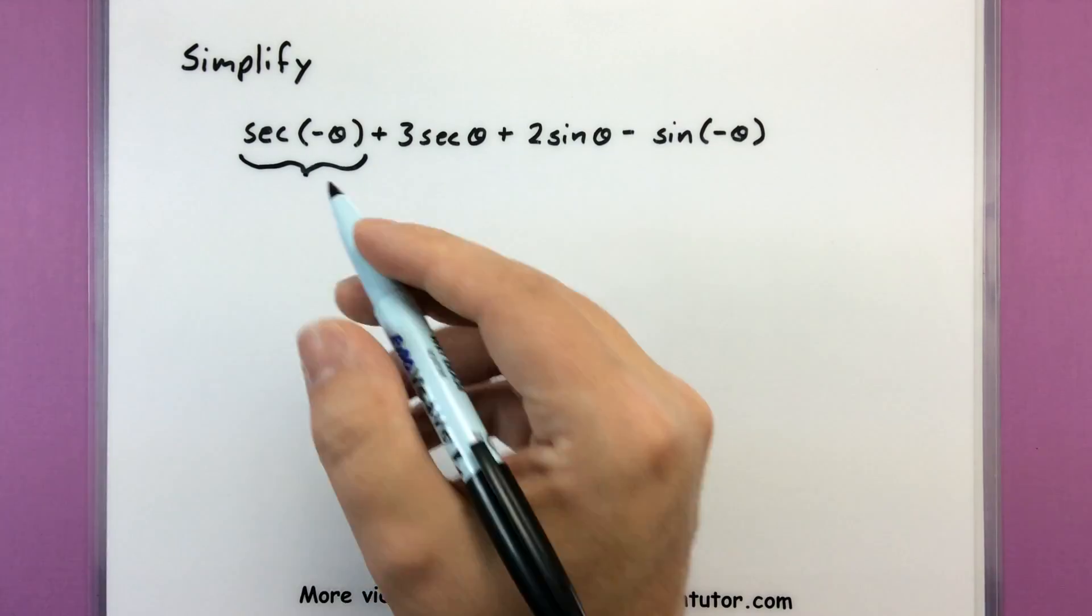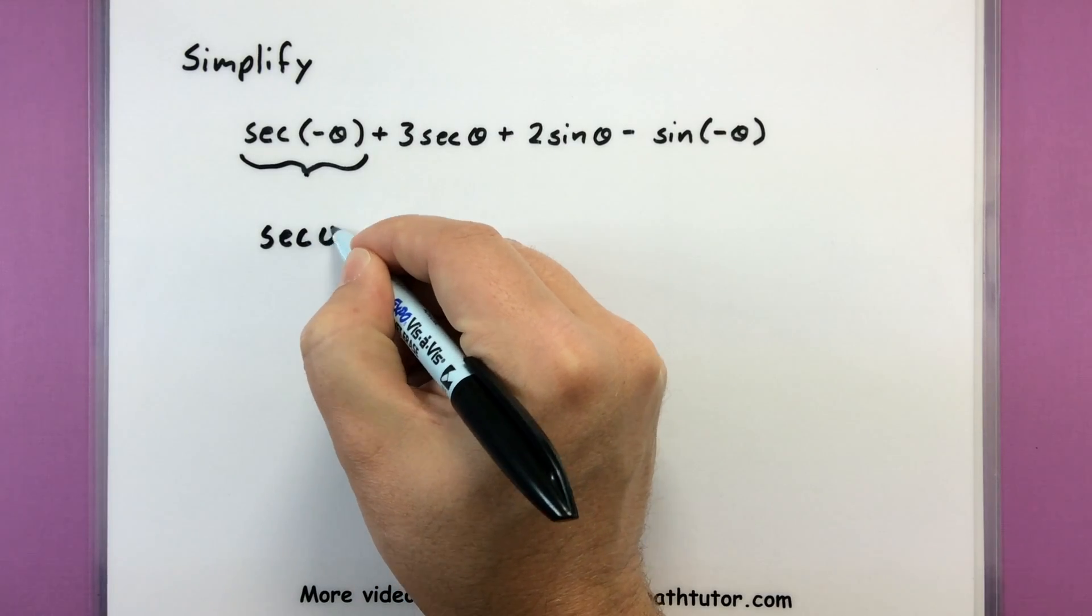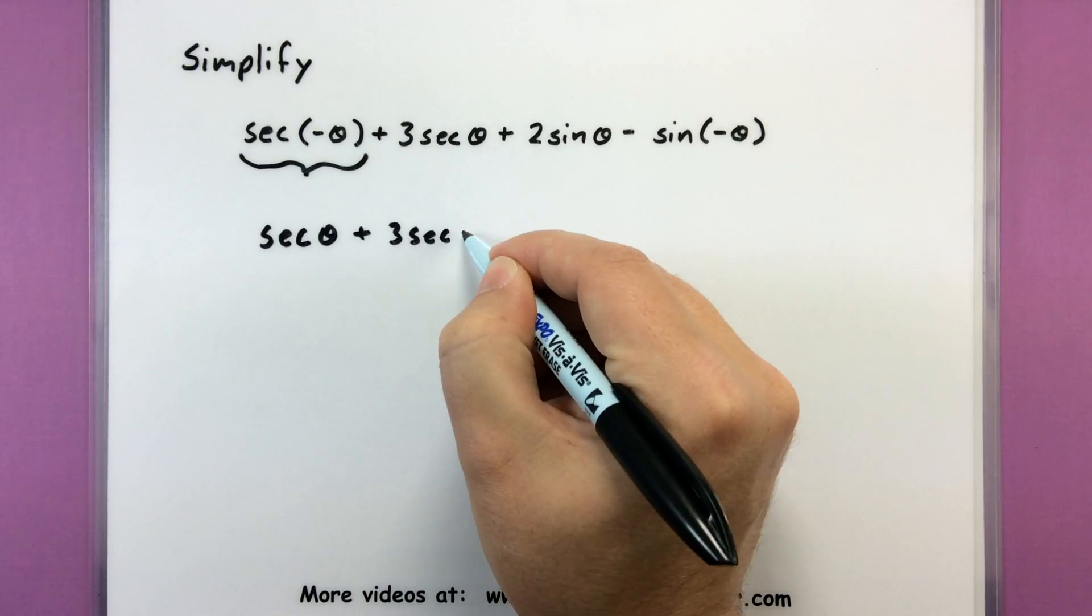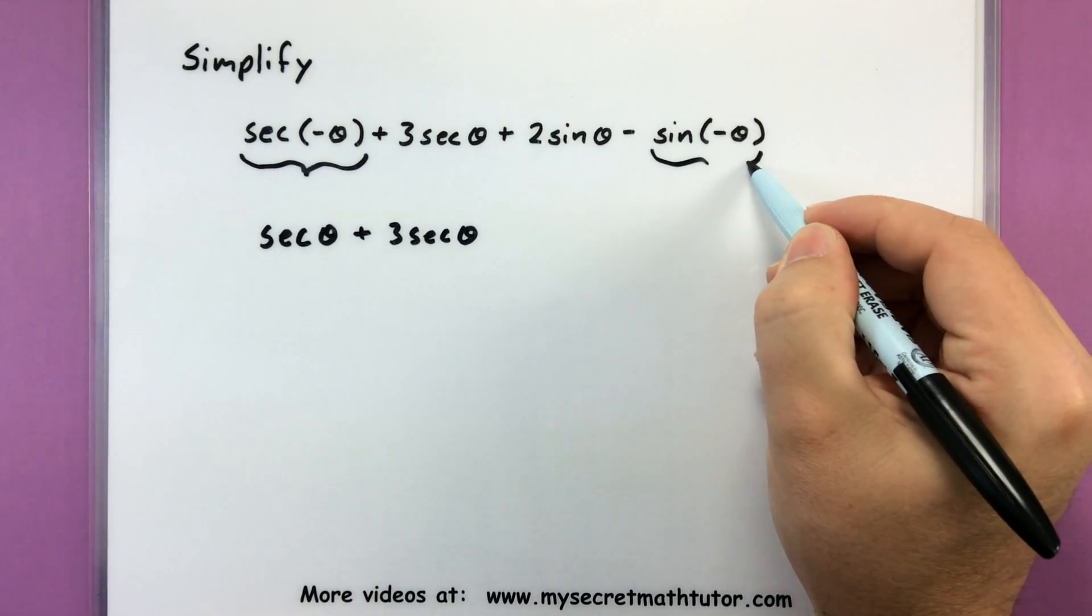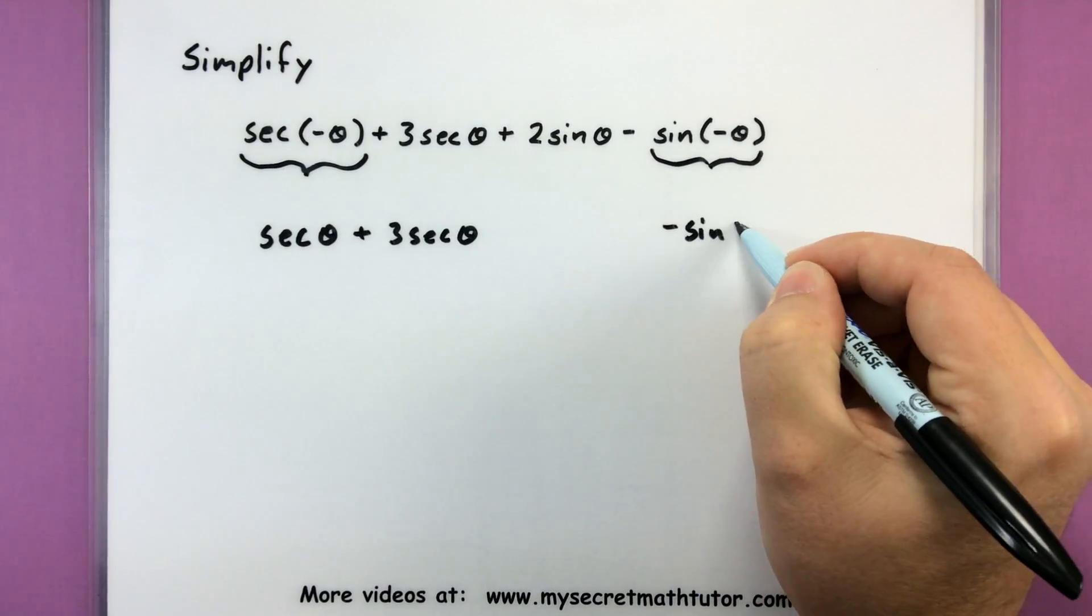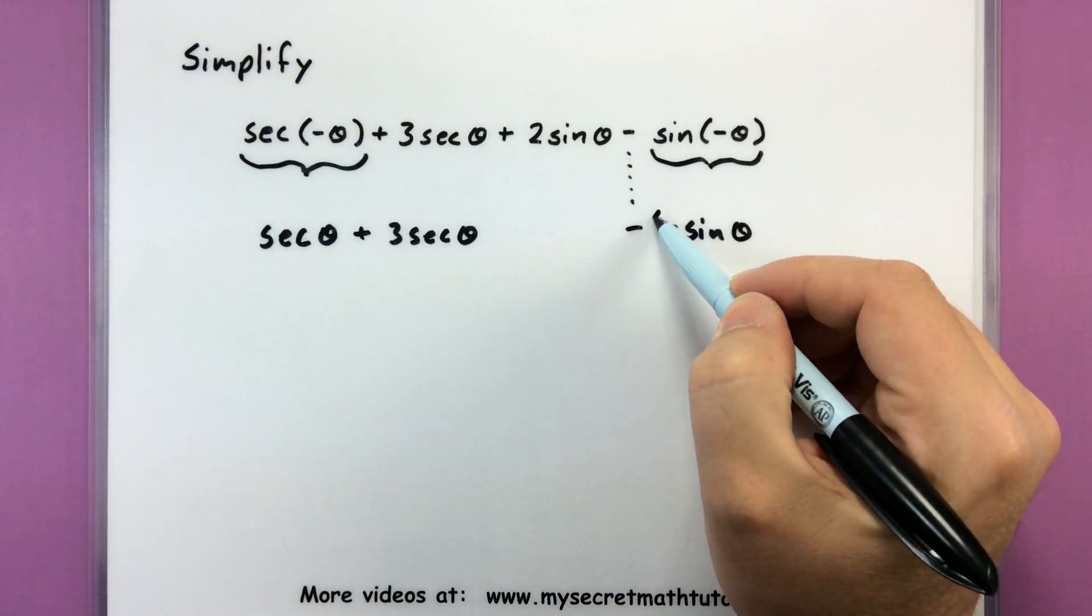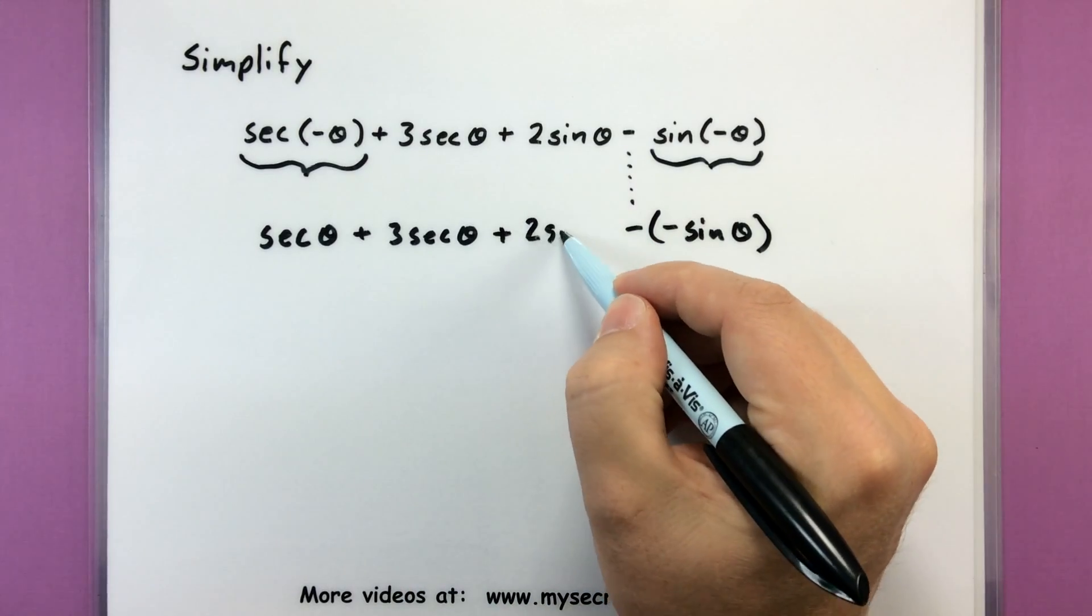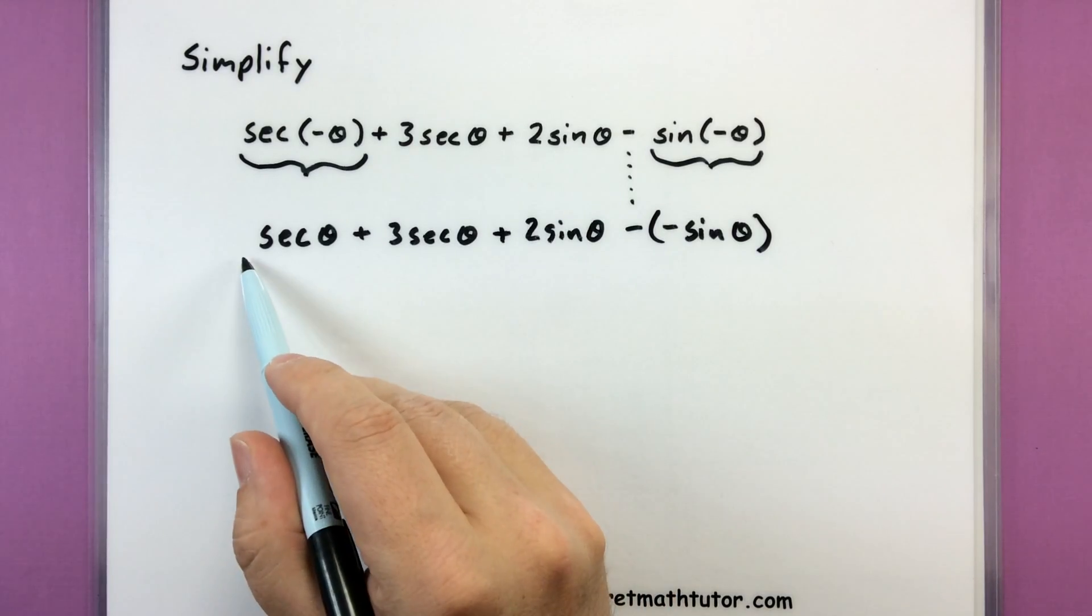All right, so let's start off with this secant of negative theta. Using my identities, this would simply equal secant of positive theta. All right, so that looks good. Over here, I have sine of negative theta. So I can replace that with a negative sine of theta. And of course, looks like I still have another negative sign, and we'll go ahead and put that in there as well, plus two sine of theta.